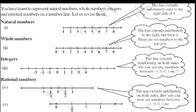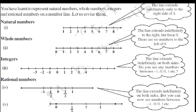The figure shows the representation of rational numbers on the number line. In natural numbers, the line extends indefinitely only to the right side from 1. In whole numbers, the line extends indefinitely to the right but starting from 0. For integers, the line extends indefinitely on both sides. For rational numbers, the line extends indefinitely on both sides and we can also see numbers between minus 1 and 0, and between 0 and 1.